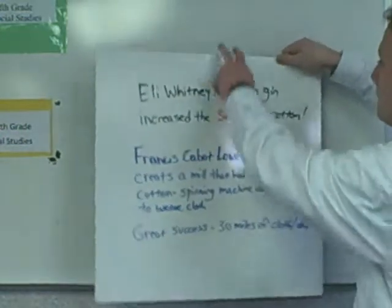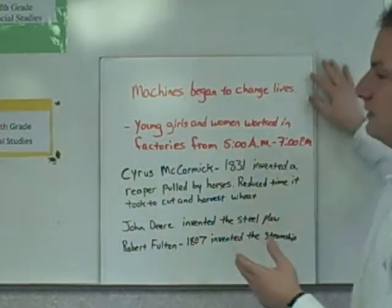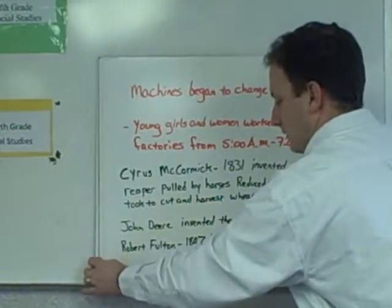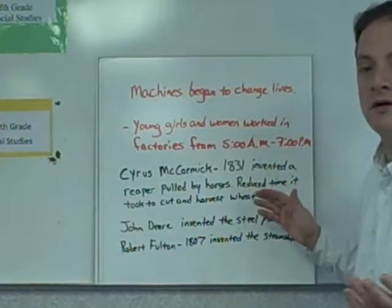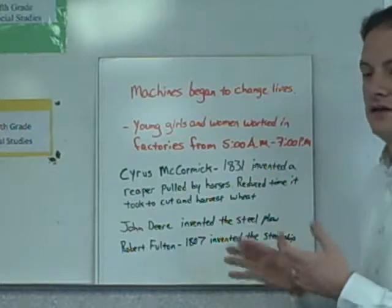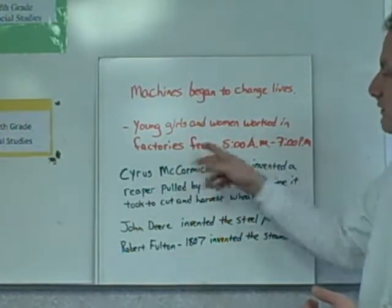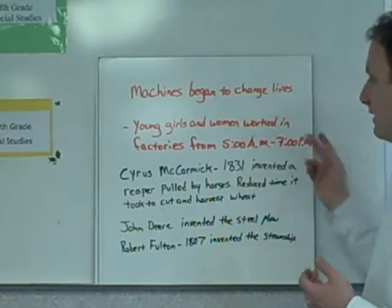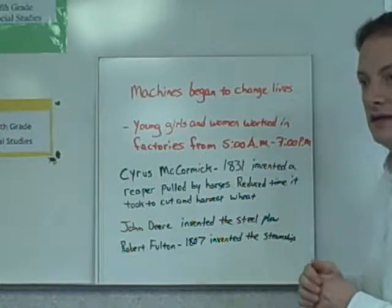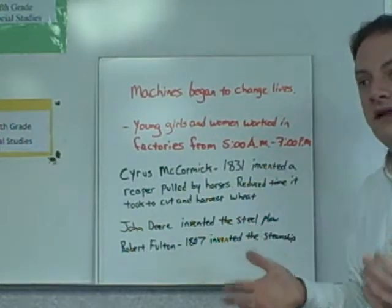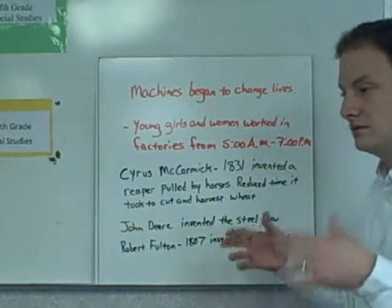Machines began to change lives — not just for the factory owners who were getting richer, but for the average citizen as well. We start to see young girls and women going to work in factories, with schedules often running from 5 a.m. to 7 p.m. During this time they also had opportunities to take classes and receive the education they needed.